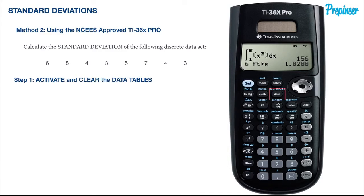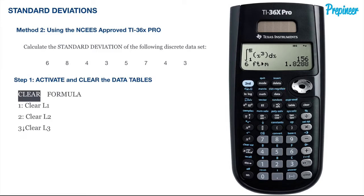The first step is to activate the data table so we can store the data points we are given in the problem statement. To do this, first hit the data button twice to come to a screen similar to this.